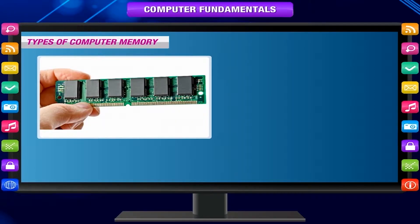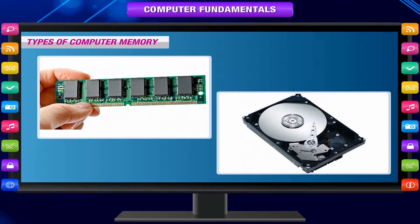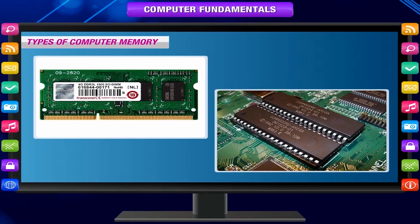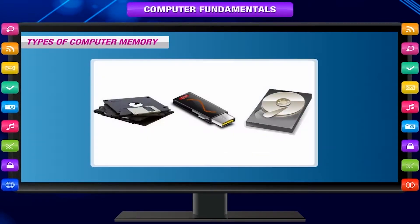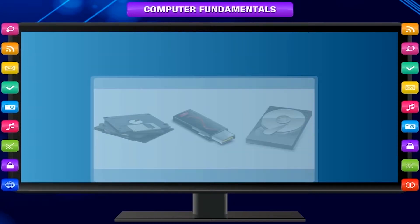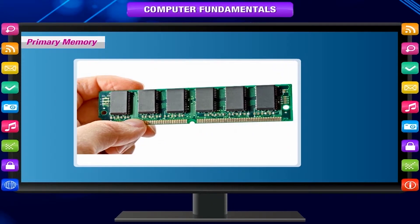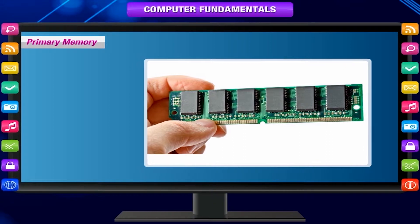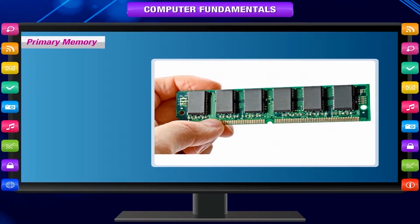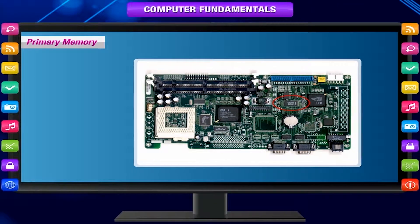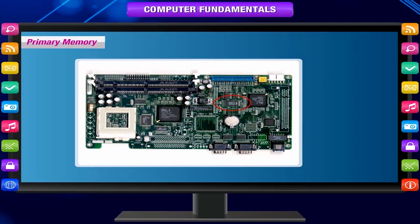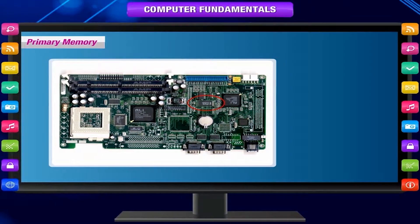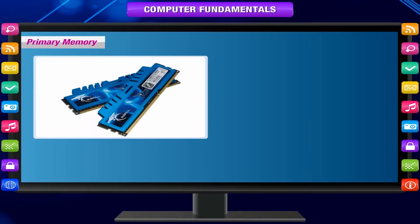Memory is divided into primary memory and secondary memory. Primary memory is again of two types: RAM and ROM. The primary memory is the main memory of the computer that stores data and instructions for processing. It communicates directly with the CPU.